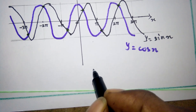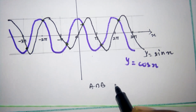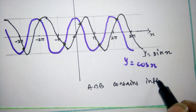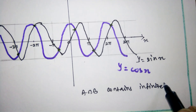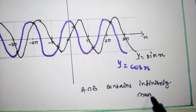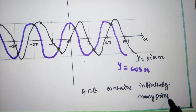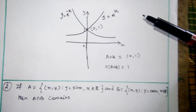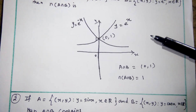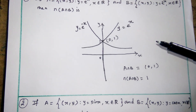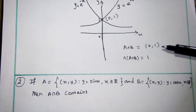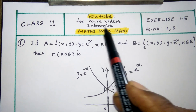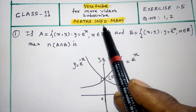Therefore, A intersection B contains infinitely many points. These two one-mark questions are very important and students should know the answers from this video. For more videos, subscribe to the channel Math Info Money.